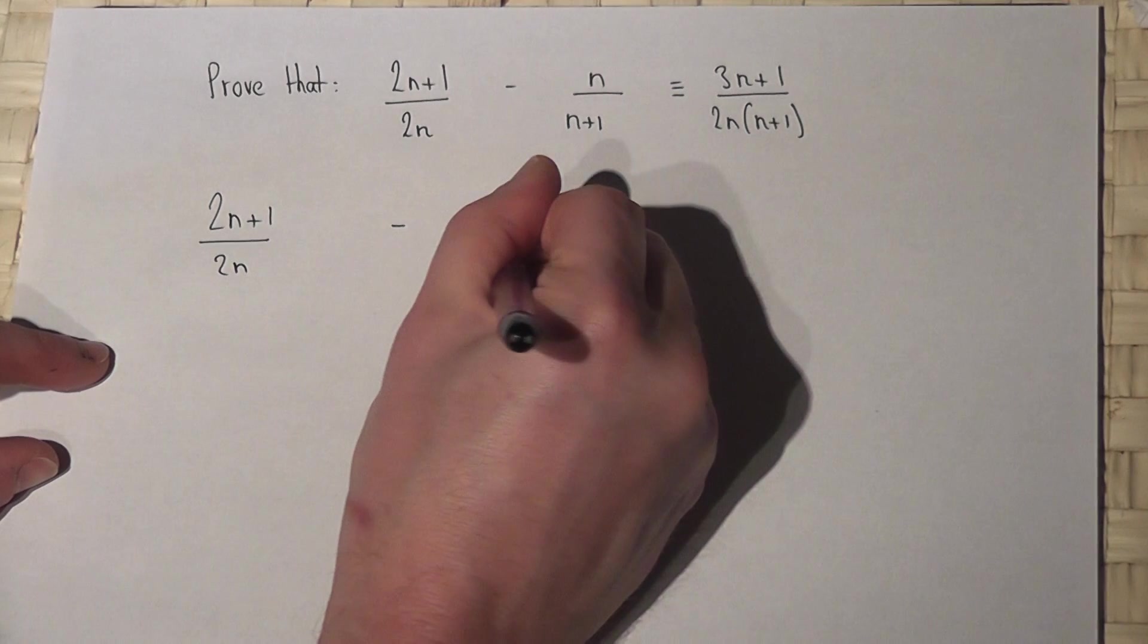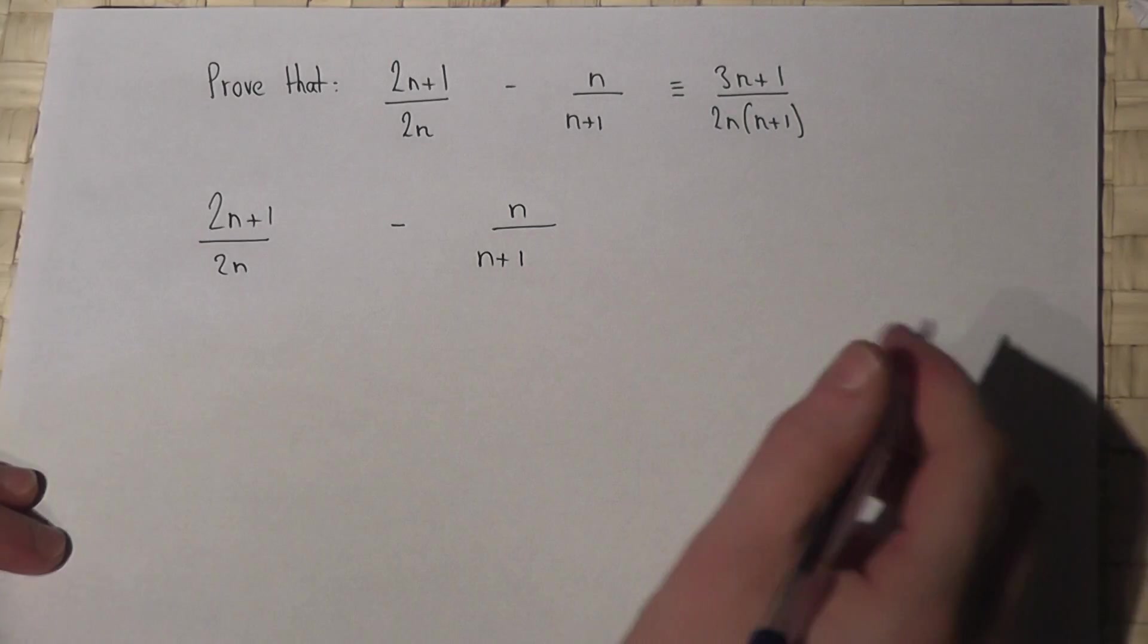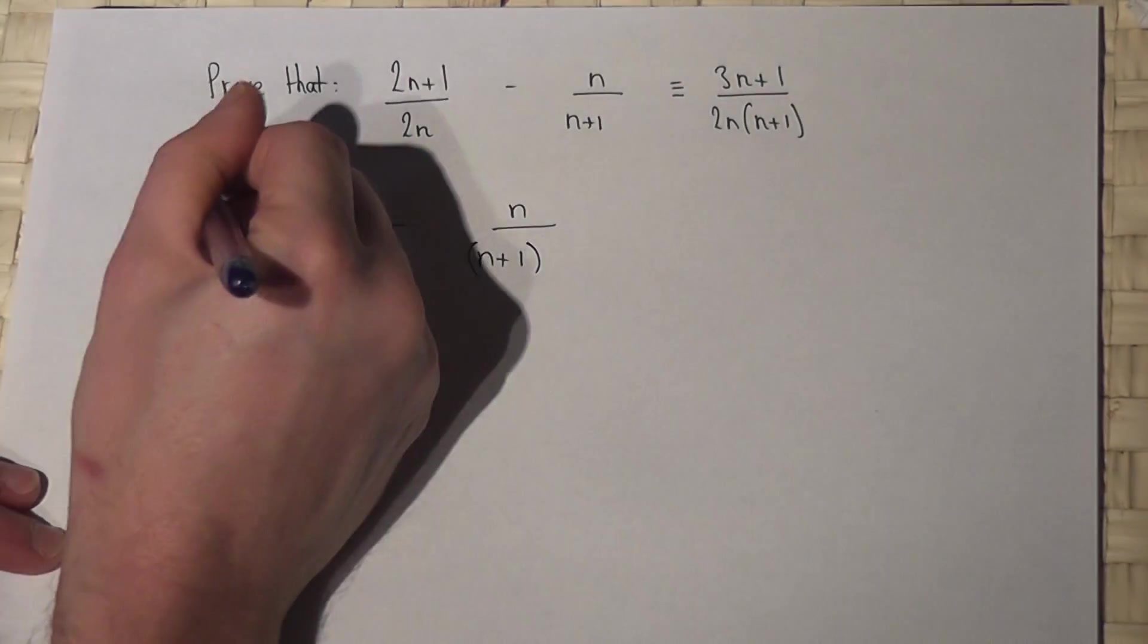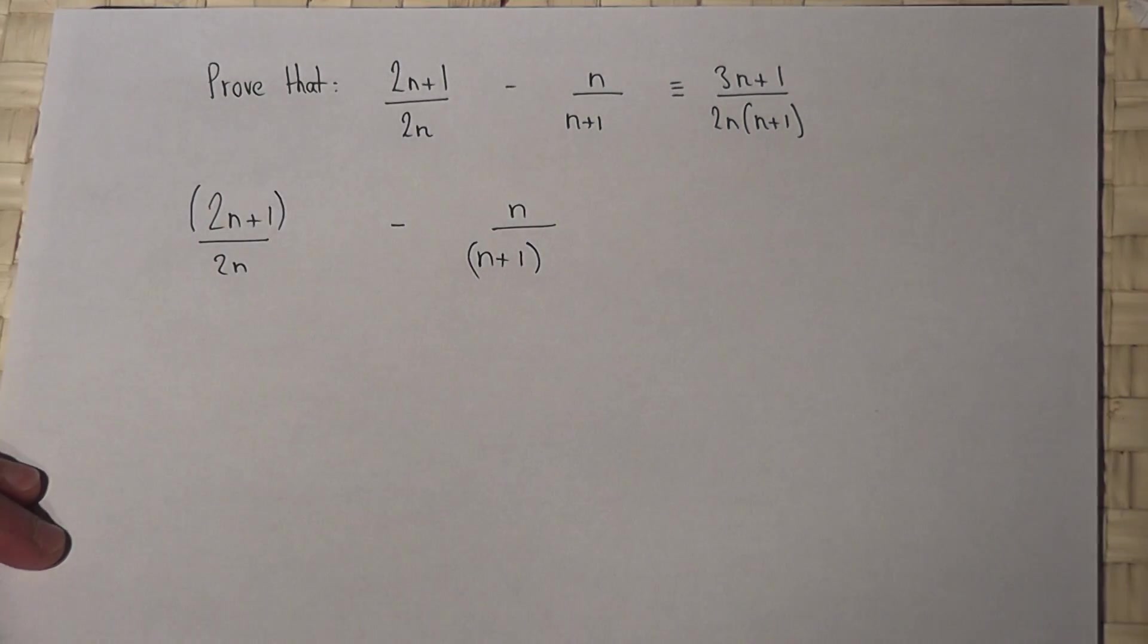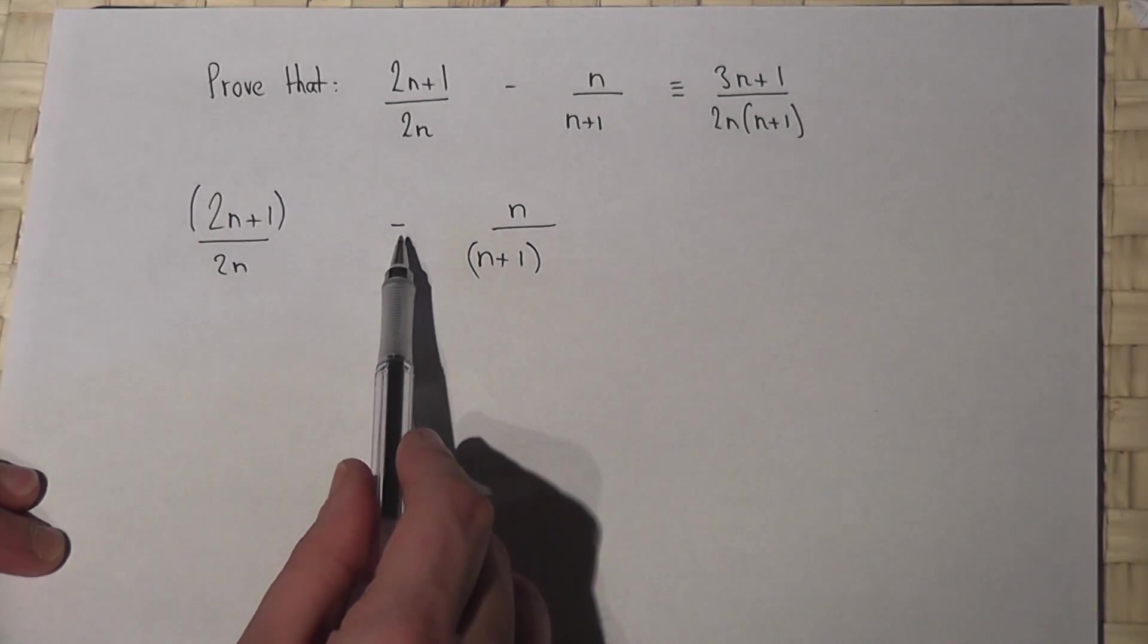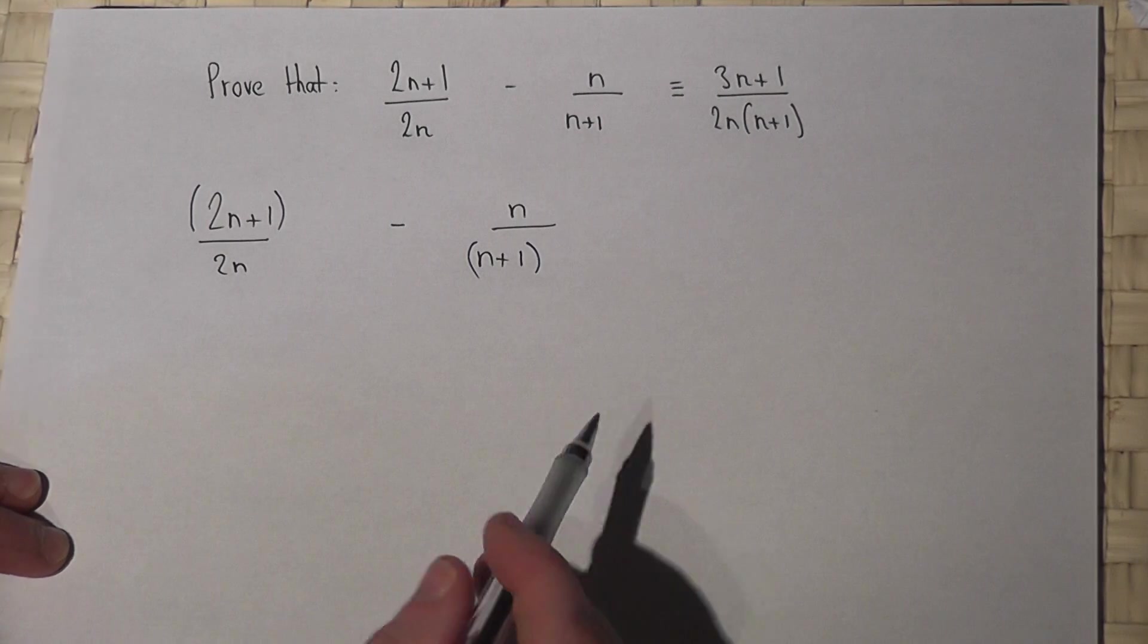My preferred technique is to start by putting brackets around any part of the fraction with more than one term. To add or subtract fractions, I require the same denominator.